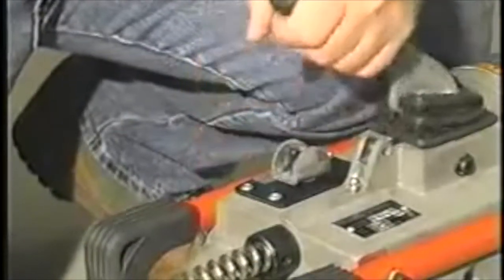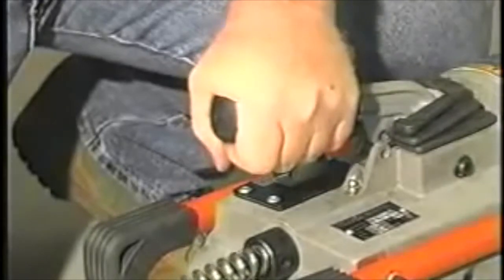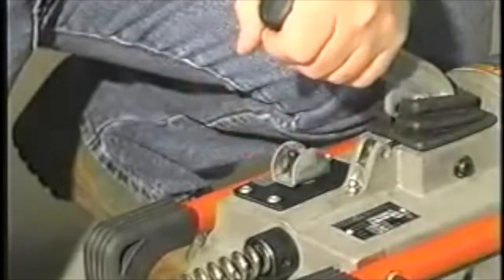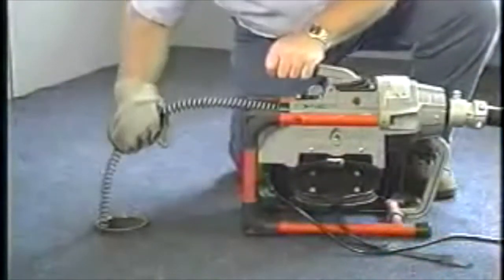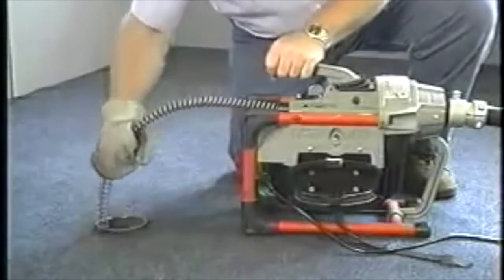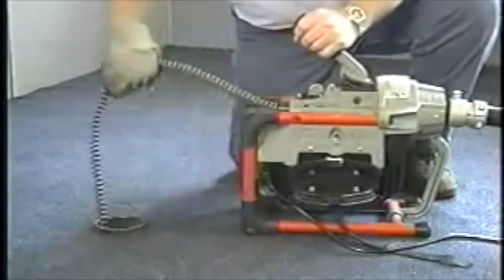Press the clutch handle and it instantly engages the cable. Release the handle and the cable instantly stops rotating, preventing overrun that can kink or damage the cable and making the K60 one of the safest machines to operate.